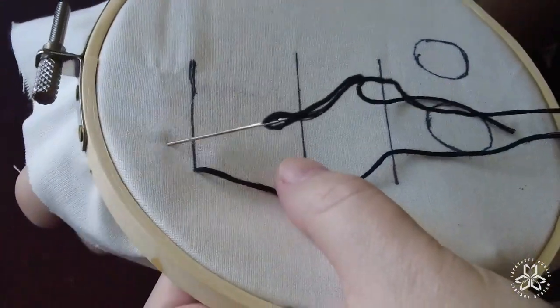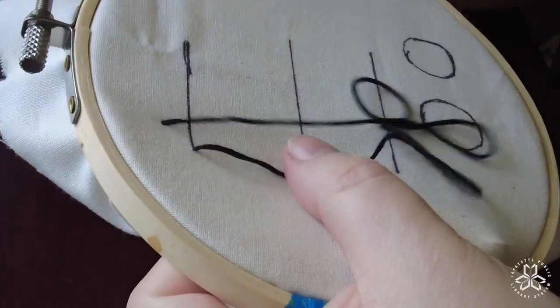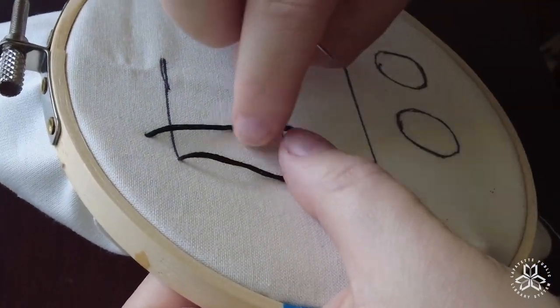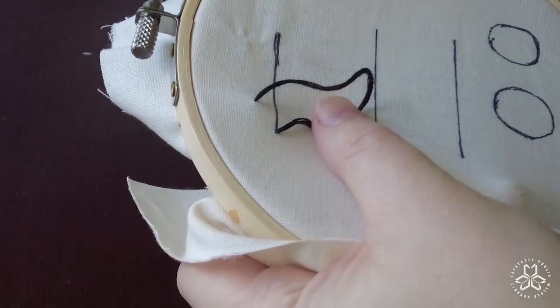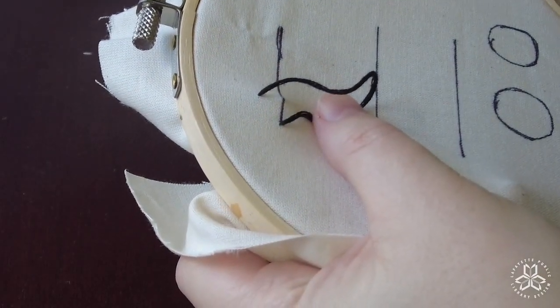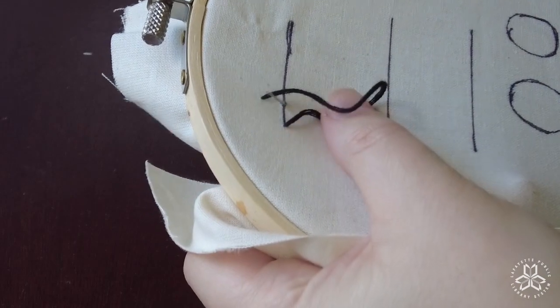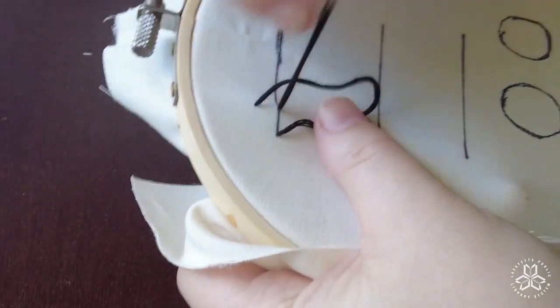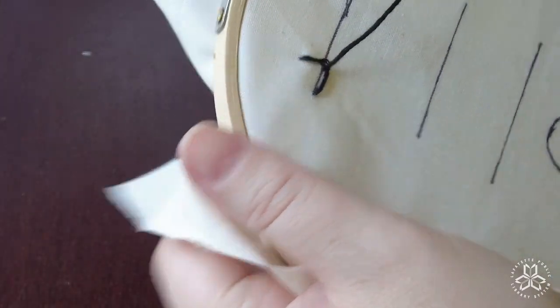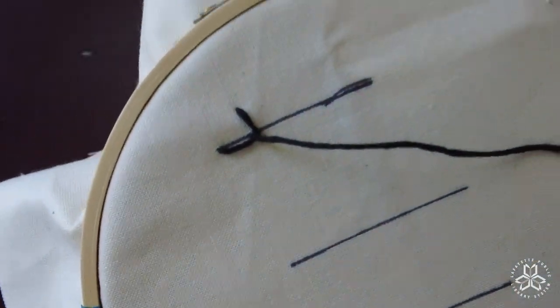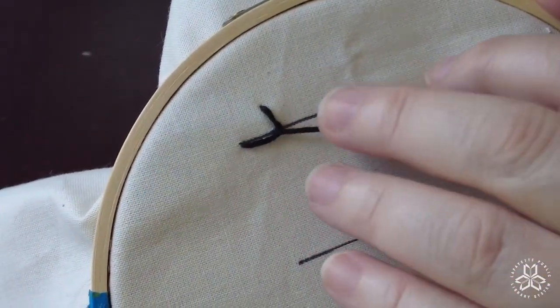Now I'm going to pull that through until I've created a little bit of a loop and then I'm going to go down to the line directly underneath that last point and I'm going to pull that taut and that creates sort of like a backward, a wonky backwards L.